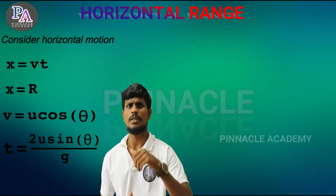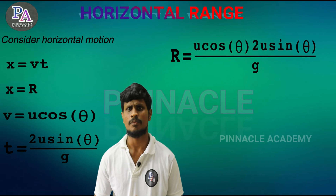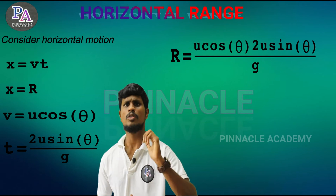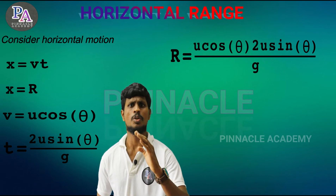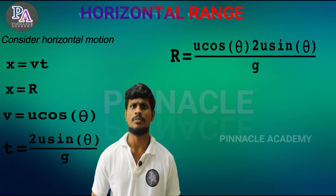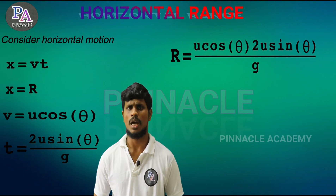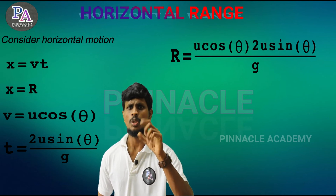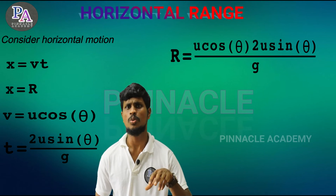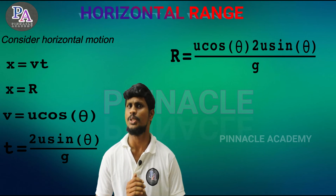Then we will write r is equal to the velocity u cosθ, and t is equal to u sinθ divided by g. Then r is equal to u cosθ multiplied by u sinθ divided by g.